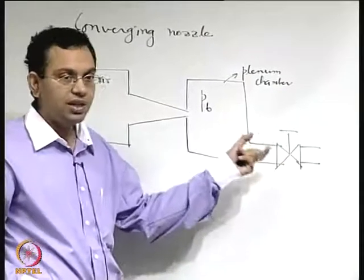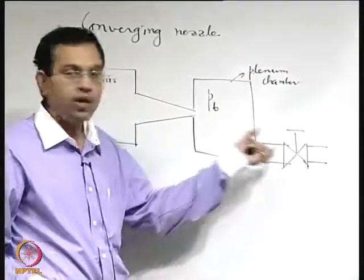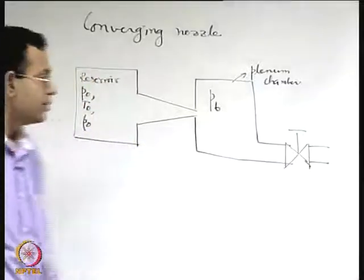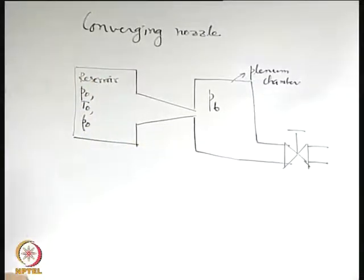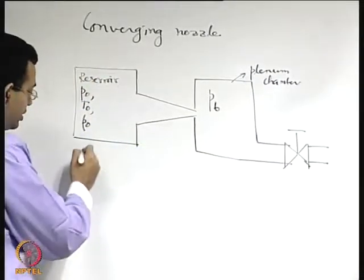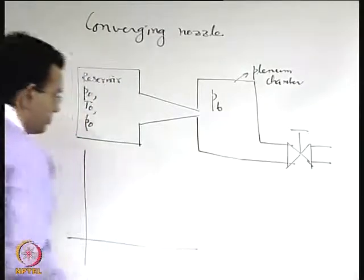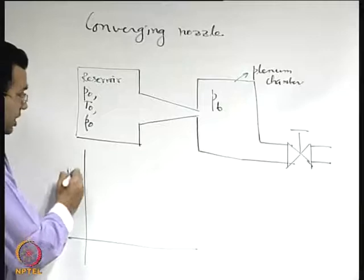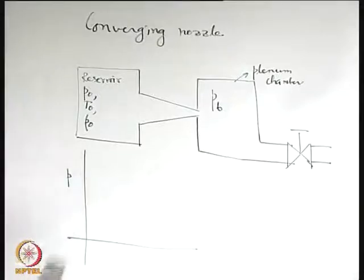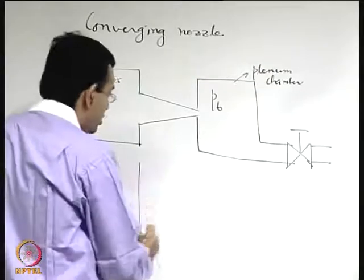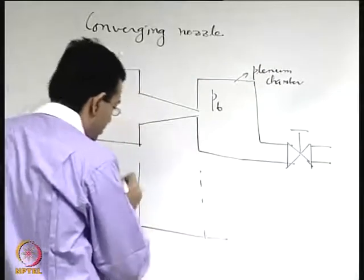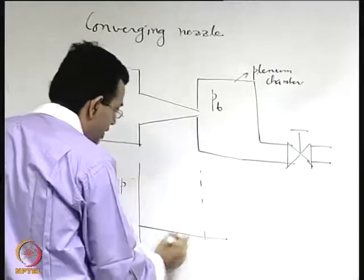How you control the pressure here is by regulating the flow through a valve located in the pipeline. If you want to reduce the pressure, you may create vacuum by allowing more and more air to escape. Let us draw a graph of pressure versus X along the nozzle from inlet to exit.